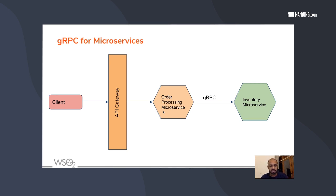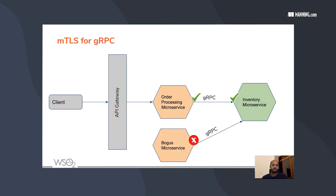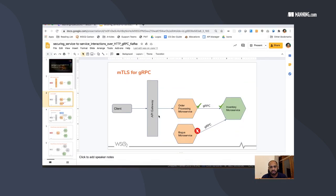Let's go directly into some samples and see how we can secure microservices over gRPC. In our example, the order processing microservice talks to the inventory microservice whenever an order has been processed. One problem with this approach is that a bogus microservice could pretend to be the order processing microservice. To solve this, mutual TLS is used so that the inventory microservice knows it is being talked to only by entities it trusts. Let's see how to enable mTLS between two communicating microservices over gRPC.